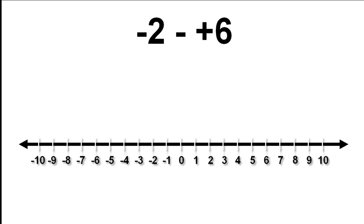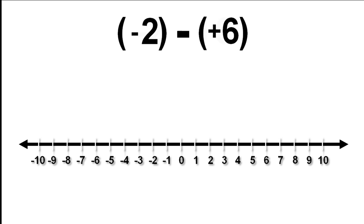Let's think about negative 2 subtract positive 6. Like we did with addition, we are going to use brackets to make things clearer. First, we put our finger on the number line at the first value in our calculation, negative 2.